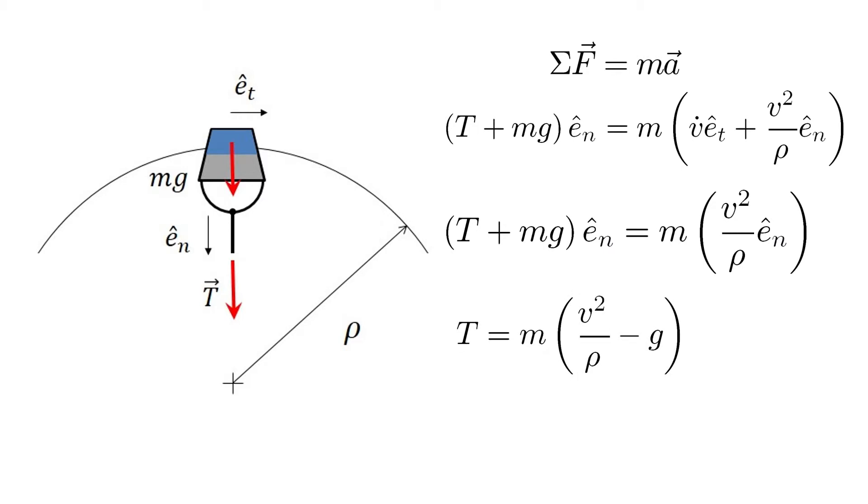Solving for tension, we can see where the force would change to a compressive one and give bounds to our expression. For the water not to fall, we see that v squared over rho must be greater than the acceleration due to gravity.